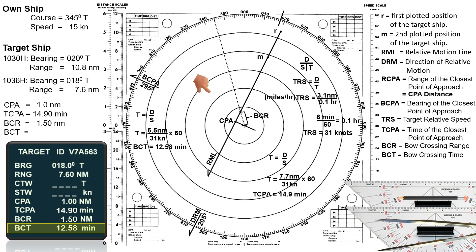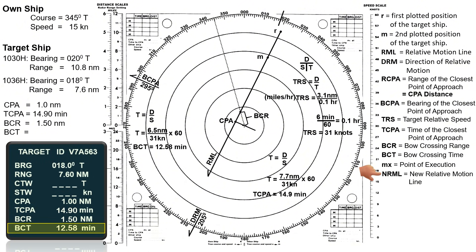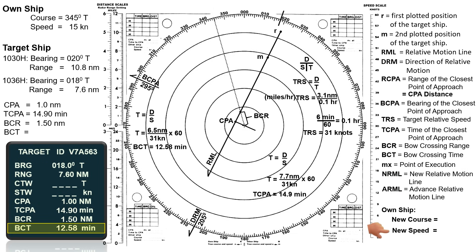This video is divided into two parts. The second part demonstrates how to determine the target's true course and speed. It also covers actions to avoid collision and maintain safe navigation, such as the point of execution MX where own ship will alter course to achieve a 2 nautical mile CPA, the new RML, advanced RML, own ship's new course to steer, and the new speed if own ship reduces its speed. For the continuation of this video, kindly check the link in the description below.